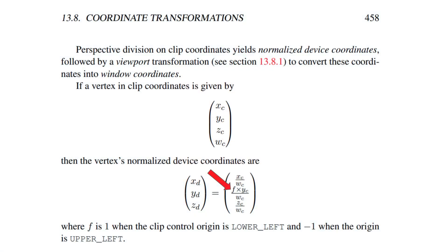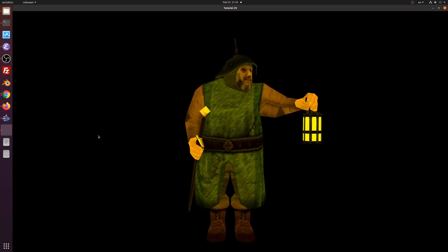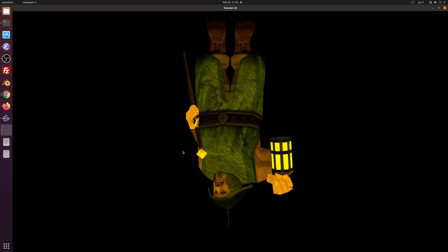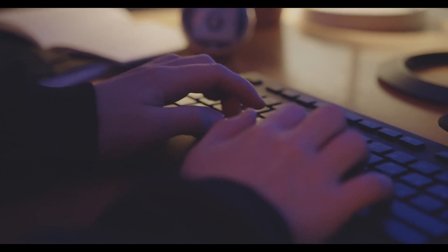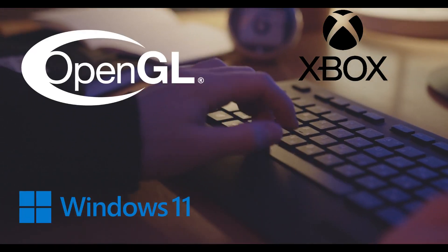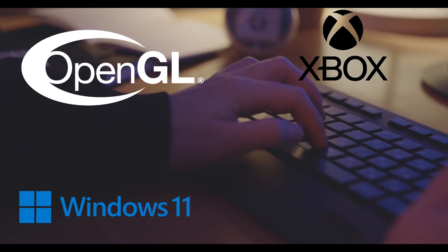Note that the Y coordinate is multiplied by F, and it says that F is 1 when the clip control origin is lower left and minus 1 when the origin is upper left. Minus 1 effectively flips the image upside down, and the reason is simply compatibility with DirectX. In DirectX, the 0,0 coordinate of the window is set to the top left corner, while in OpenGL the default is the bottom left corner. If you're developing a game for multiple platforms or if you're porting a game from Xbox or Windows to the OpenGL world, you can use this parameter to align the system to a common baseline.